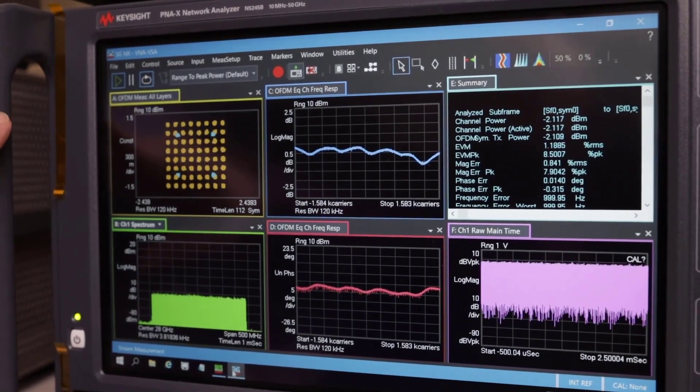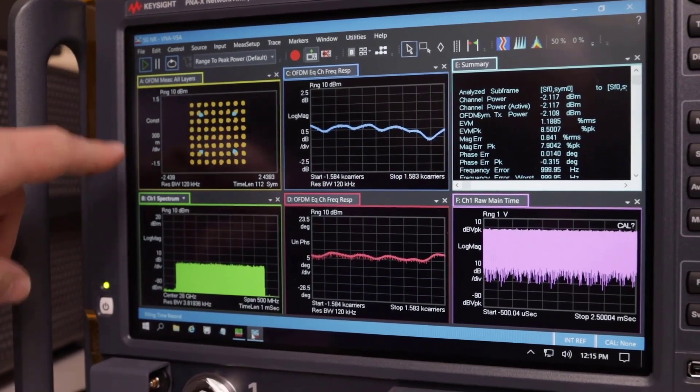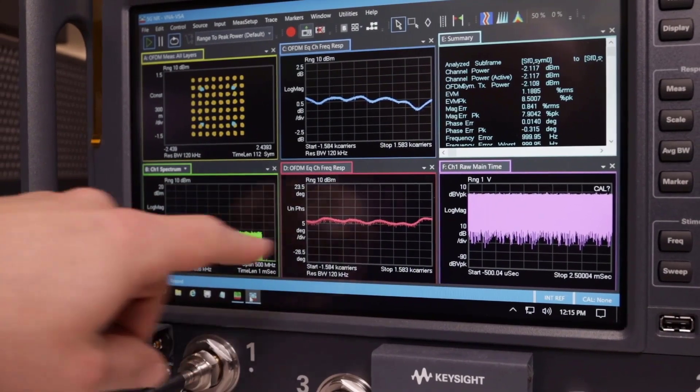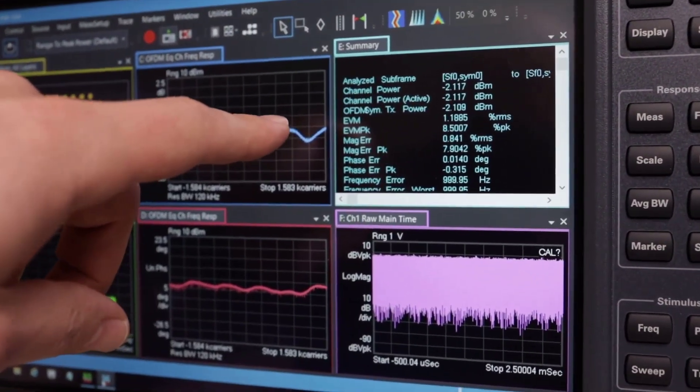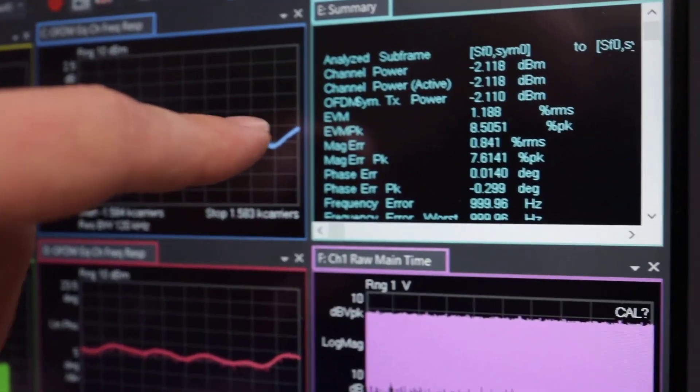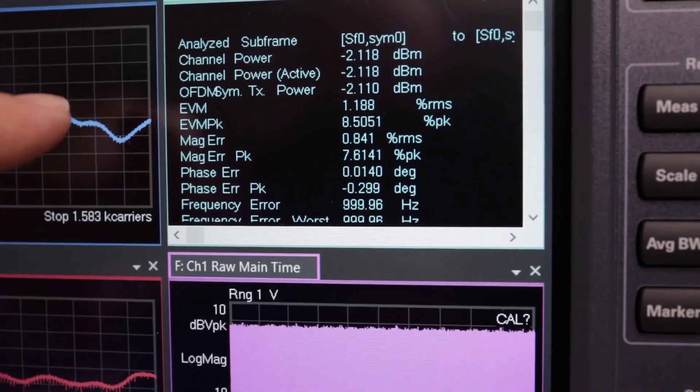We're running VSA directly on the PNAX. We can see our constellation, our spectrum, our time trace, and also the demodulation or symbol EVM. You can see here we're getting about 1.2% of EVM.